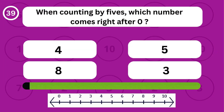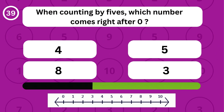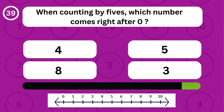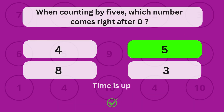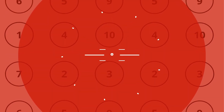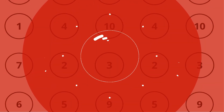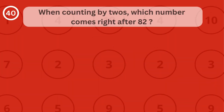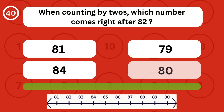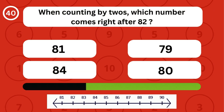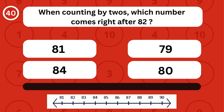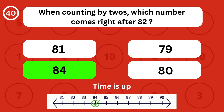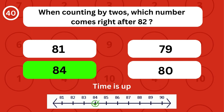When counting by twos, which number comes right after 82? When counting by twos, the number 84 comes right after 82.